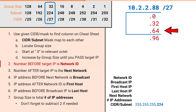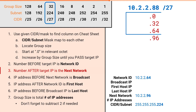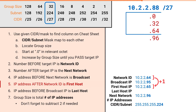The number before our target IP is the network ID, which makes our network ID 10.2.2.64. The number after our target IP is the next network, which makes our next network 10.2.2.96. The IP address before the next network is our broadcast IP, which makes our broadcast IP 10.2.2.95. The IP address after the network ID is our first host IP, which makes our first host IP 10.2.2.65. The IP before our broadcast IP is the last host IP, which makes our last host IP 10.2.2.94.